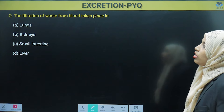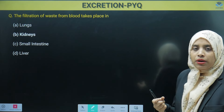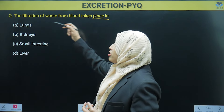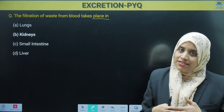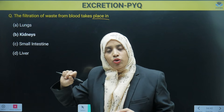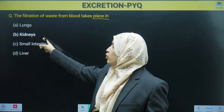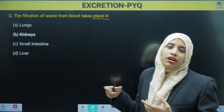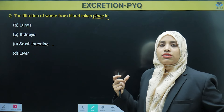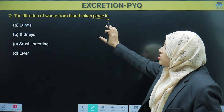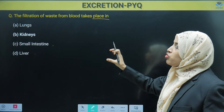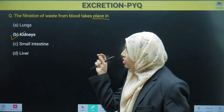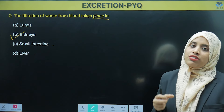Next: filtration of waste from the blood — where does it take place? The options are lungs, kidney, small intestine, or liver. In the lungs, exchange of gases takes place. The kidney is the filtering unit — it has nephrons which filter the blood. Small intestine is part of the digestive system. Liver also helps in digestion and produces bile juice. So directly we can mark kidney, because the kidney separates waste from our blood.